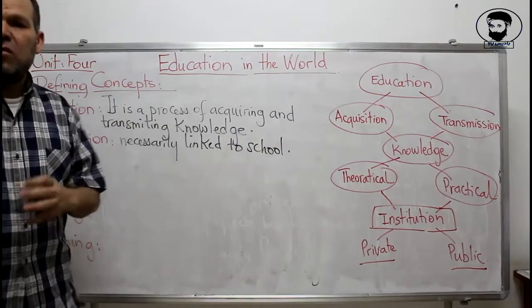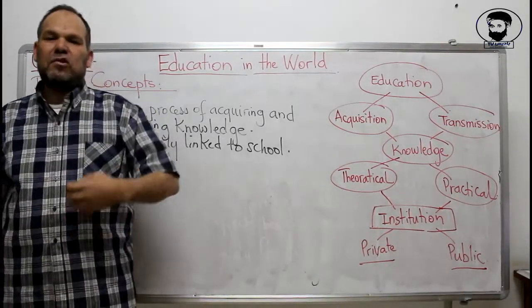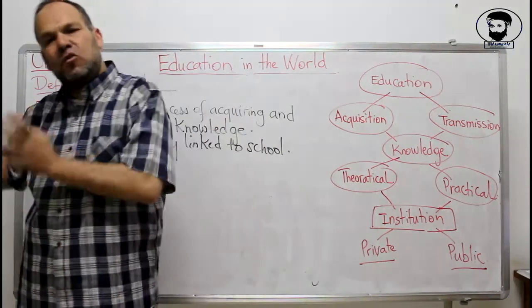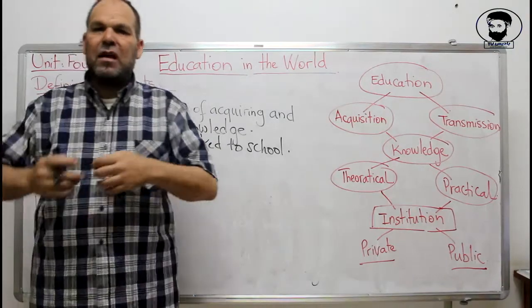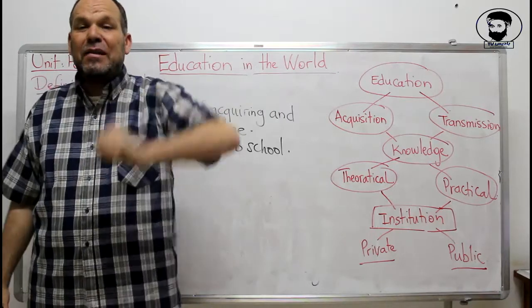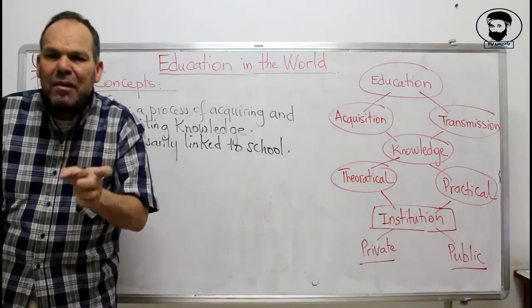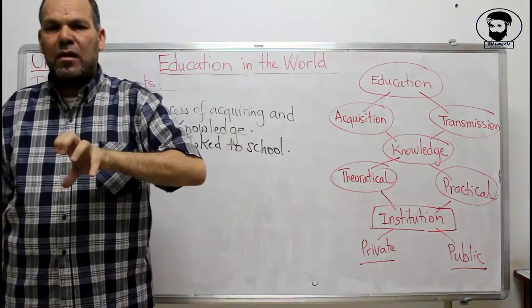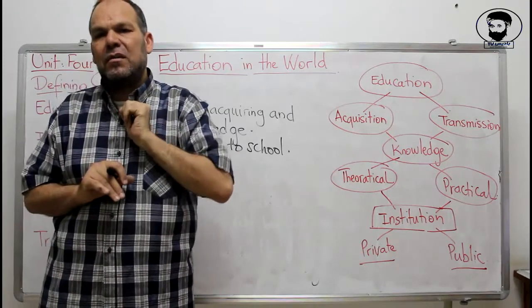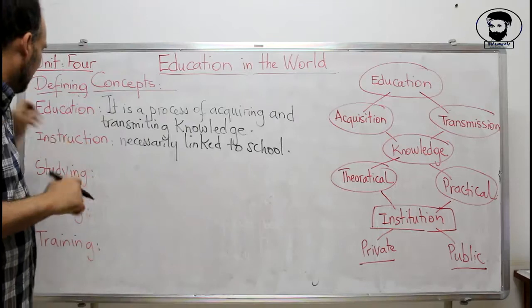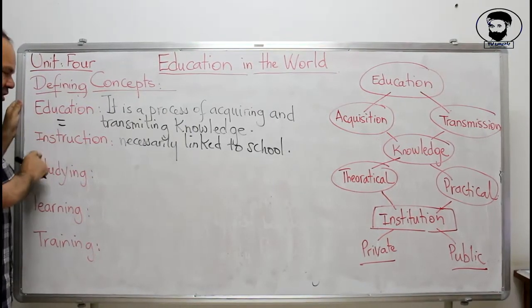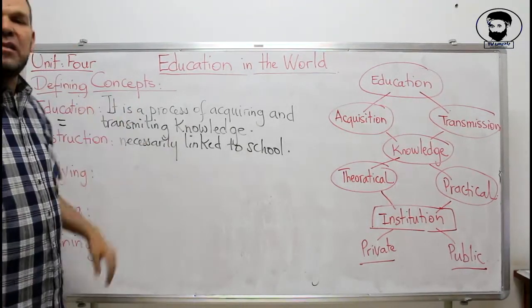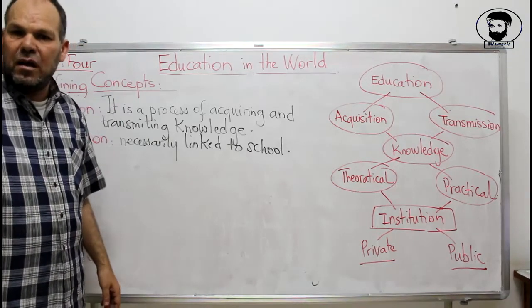When you use the word 'instruction' in English, it is specific. The word 'education' is general — home education, school education, university, a private institution. But the word 'instruction' is mainly used for school. You get instruction at school. This is the slight difference between 'education' and 'instruction.' Both are synonyms — both mean getting knowledge — but instruction specifically means getting knowledge at school, while education can be at school or even in a library.